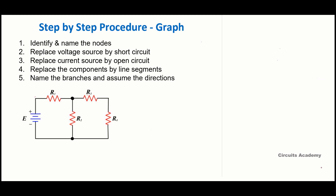Now we'll discuss the step-by-step procedure to obtain the graph of the network. Step one: identify and name the nodes. A node is a point of interconnection of two or more elements. Consider the circuit shown in the figure. We have one node connecting the battery and R1, another node connecting R1, R2, and R3, a third node connecting R3 and R4, and a bottom node connecting the battery, R2, and R4.